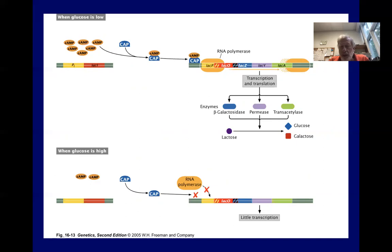the operon is turned off because glucose concentrations are higher in the cell. And there's a little cyclic AMP to make the CAP-cAMP complex.